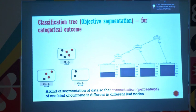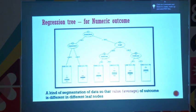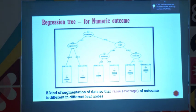Let's go to the next topic. This is called regression tree — another kind of decision tree. Decision tree is of two kinds: classification tree and regression tree. Regression tree is when your outcome is actually numeric. In classification tree the percentage of classes was changing across nodes; in regression tree the average value changes. Regression tree is for numeric outcomes. Classification tree handles categorical outcomes — zero or one — like who will respond, who will default, who will make payment.